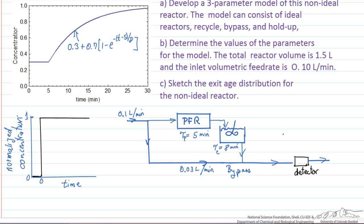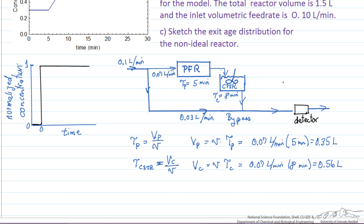And now we can, from our flow rates and our times, calculate the volumes of the plug flow reactor and the CSTR to determine if we've modeled the system. So I've used the definition for residence time, which is the volume of the reactor over the volumetric flow rate. And I've rearranged, substituted in the values, to calculate the volume of the plug flow reactor and the volume of the CSTR.